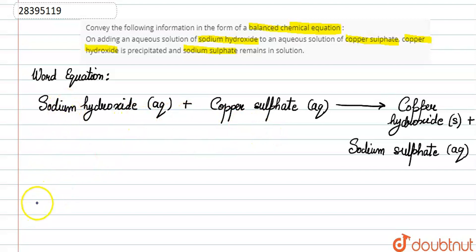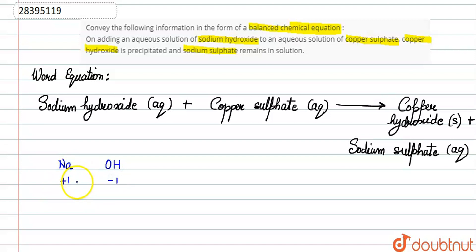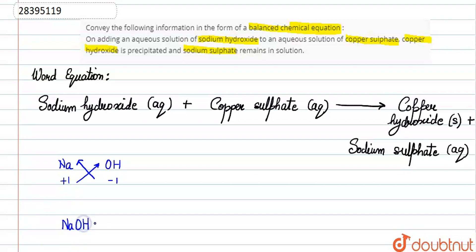सबसे पहले लेते हैं sodium hydroxide। Sodium का symbol होता है Na, hydroxide का OH। Na हो गया हमारा plus one, hydroxide हो गया minus one। ये इनकी valency इधर जाएगी और इसने हमारा chemical symbol बना दिया: NaOH। और यह aqueous state में है।